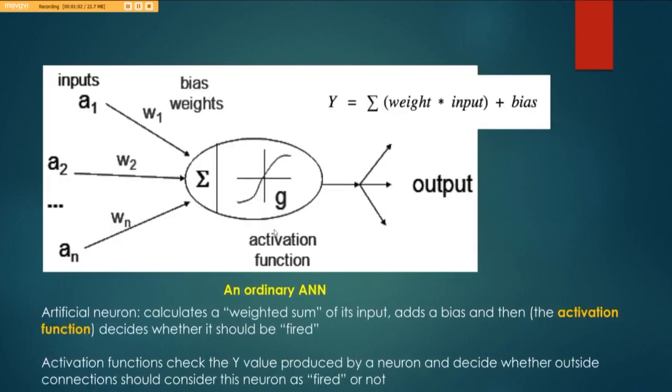So just to reiterate, this is an ordinary artificial neural network and here is where you have an activation function. We multiply the input by the weight and add the bias and that is what is fed in here. So an artificial neuron calculates the weight sums of its input like so and adds the bias and then the activation function.